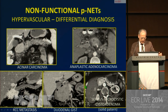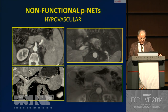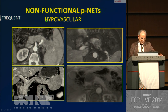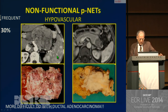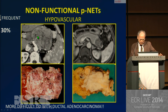In some cases, non-functional PNETs are hypovascular — this less frequent appearance was seen in about 30% of our cases. The diagnosis is more difficult, especially the differential diagnosis with pancreatic adenocarcinoma. We can still make the hypothesis of a large neuroendocrine tumor when there is a large non-homogeneous mass, but when we see a hypovascular mass in the tail of the pancreas, the differential diagnosis cannot be made.